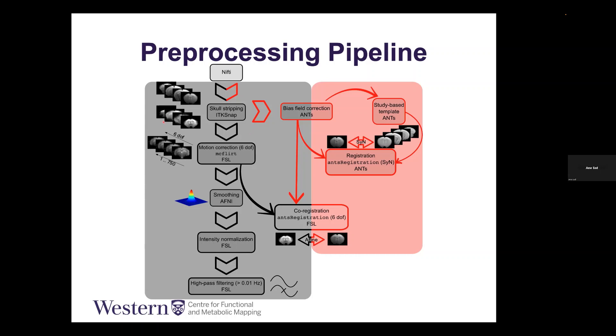Our pre-processing pipeline is pretty standard. We have the functional images here, and the anatomical images on the other side in red. For the functional images, we remove the skull, do motion correction, do some smoothing. As Ravi mentioned, it's usually below two voxels. Since we have 300 by 300, my smoothing kernel is 500 microns. Then we do intensity normalization and high-pass filtering to remove all the low drifting noise.